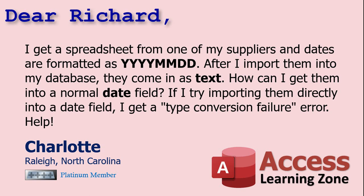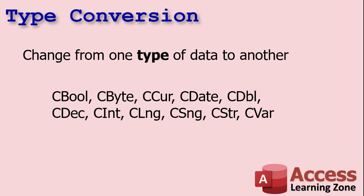What are the type conversion functions? Well, these are: CBool, CByte, CCur, CDate, CDouble, CDecimal, CInteger, CLng (long integer), CSng (single), CStr (string), CVar (variant). Those are all the different data types you can convert to in Microsoft Access, and these work in your queries, forms, reports, VBA — pretty much everywhere.